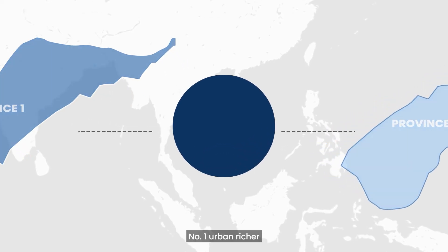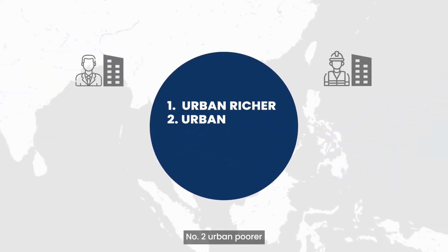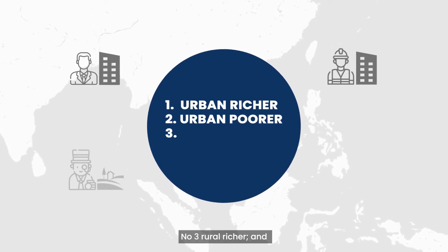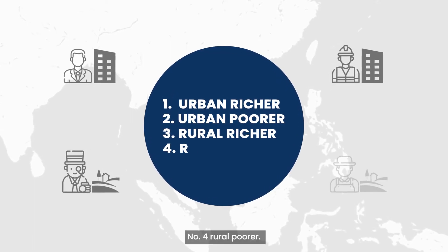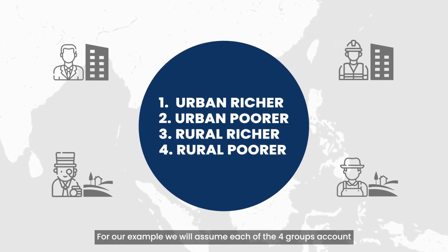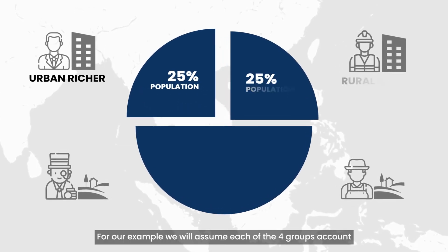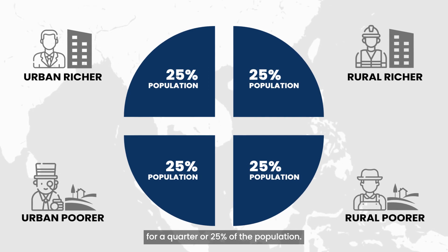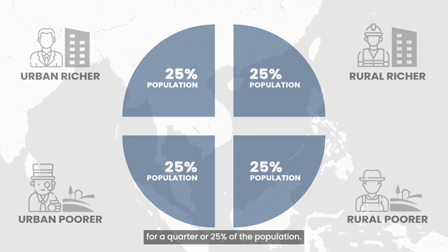In each province, we will calculate the access rate of these four groups: number one, urban richer; number two, urban poorer; number three, rural richer; and number four, rural poorer. For our example, we will assume each of the four groups accounts for a quarter, or 25%, of the population.